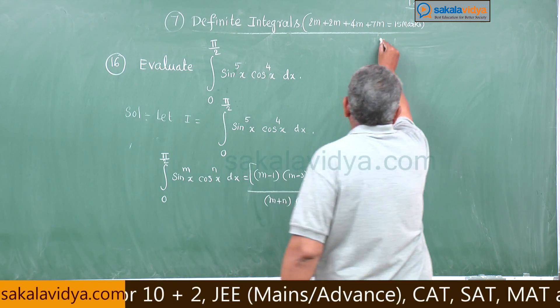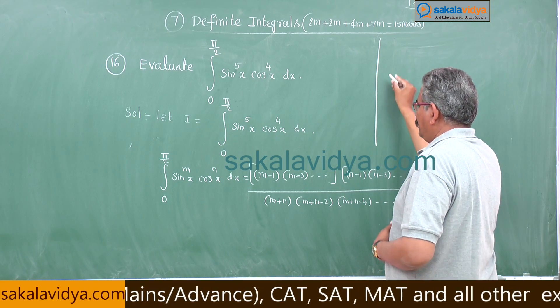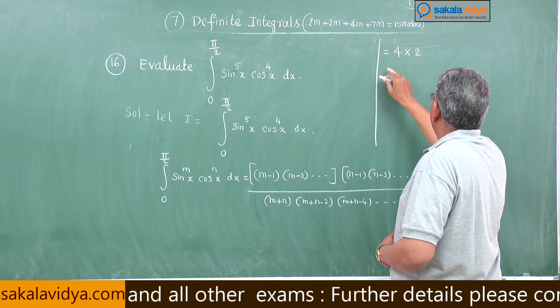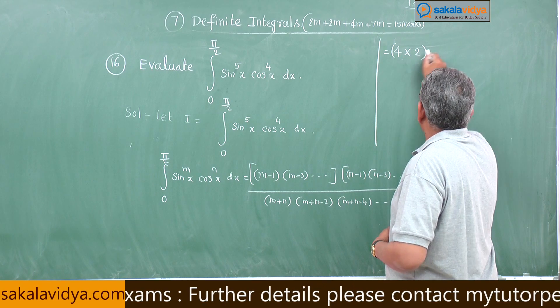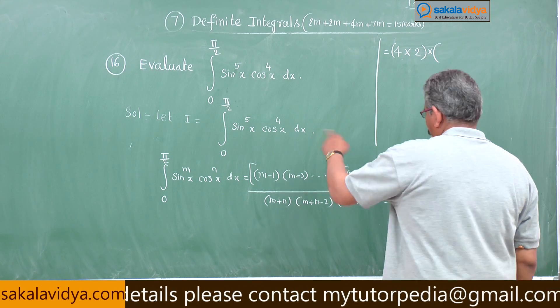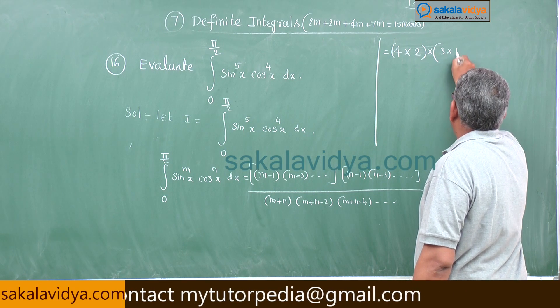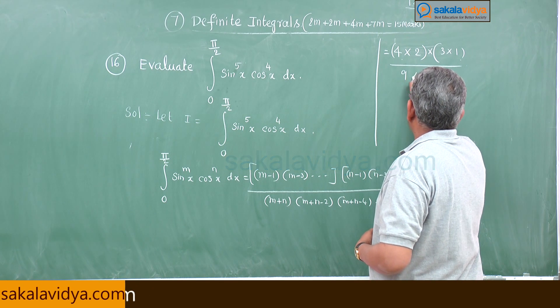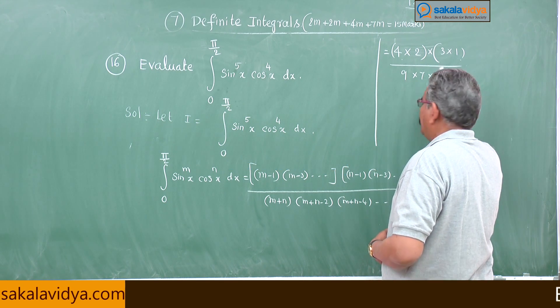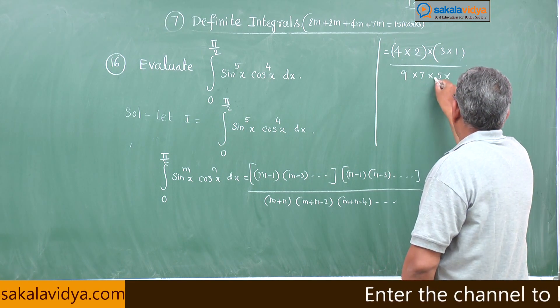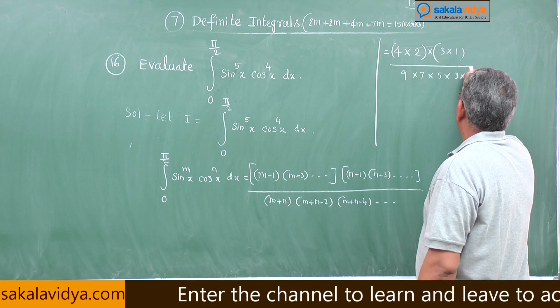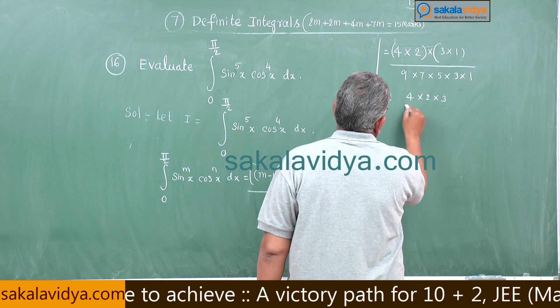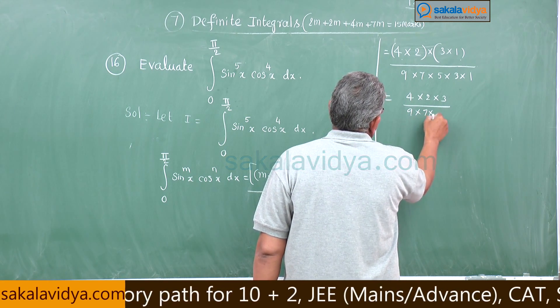We get m minus 1, 5 minus 1 is 4, then 2, that is all. Next 4 minus 1 is 3, into 1 by m plus n. m plus n is 9 is 7, 5. Next 5 minus 2 is 3, 3 minus 2, 1 leave it.